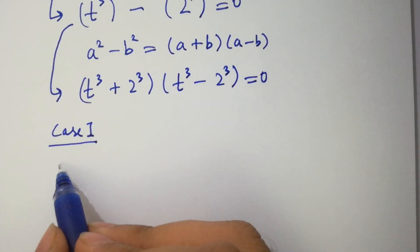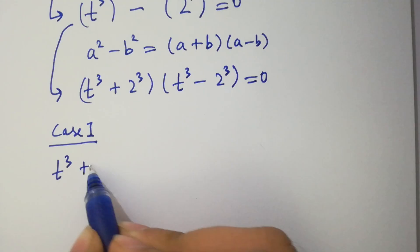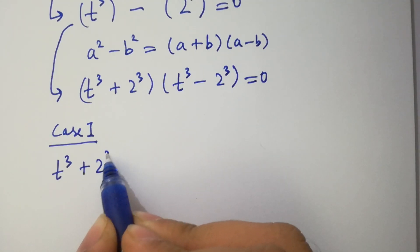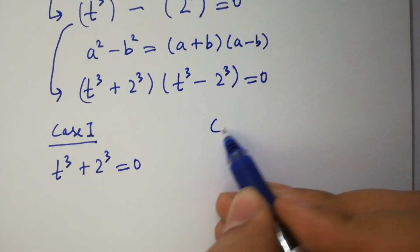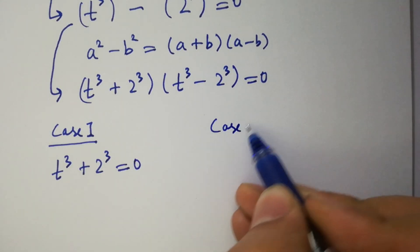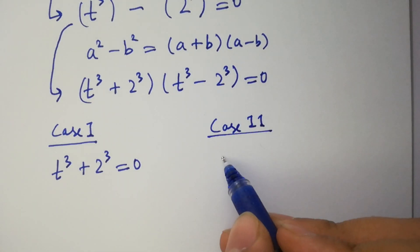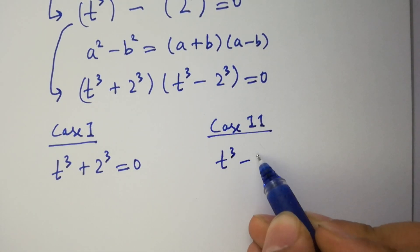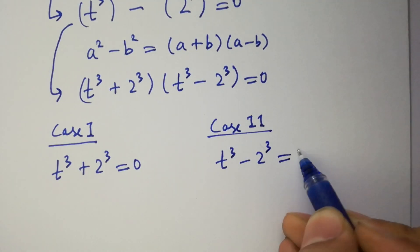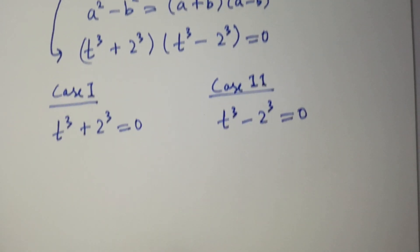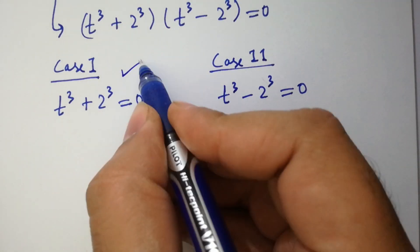t cubed plus 2 cubed equal to 0. And the second case is t cubed minus 2 cubed equal to 0. First of all, I am going to solve Case 1.